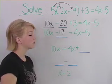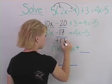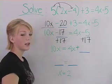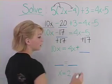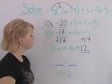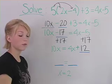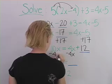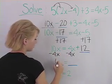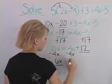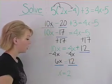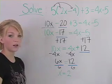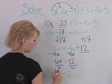Now we're going to add 17 to both sides, which gives us 10x equals 4x plus 12. Now we're going to subtract 4x from both sides, which gives us 6x equals 12. Now we divide both sides by 6, which gives us our final answer of x equals 2.